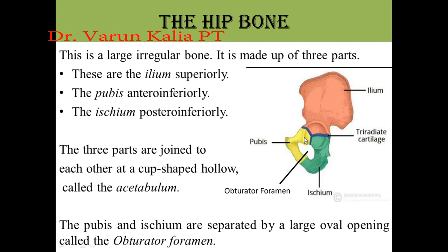This is the acetabulum — a cup-shaped hollow structure. The three parts are formed by the acetabulum. The pubis and acetabulum are separated by a large oval opening.